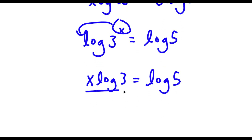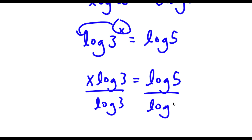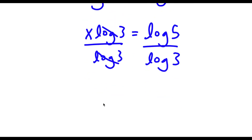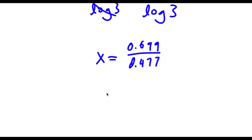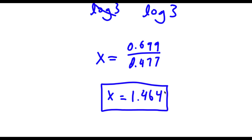Now if I divide both sides by log 3, these two cancel out and I'm left with x is equal to 0.699 over 0.477, which is equal to 1.464. So this is my answer.